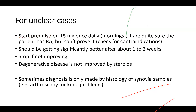If you think it's rheumatoid arthritis but all the tests are negative or you have no access to tests, you can start prednisolone 15 milligrams once daily in the morning. If you are quite sure the patient has rheumatoid arthritis but can't prove it, the patient should be getting significantly better after about one to two weeks. Tell him to come back after one to two weeks — if he says he's much better, that kind of proves he has some systemic inflammatory disease. If he's not getting better, stop immediately, because degenerative disease is not improved by steroids.